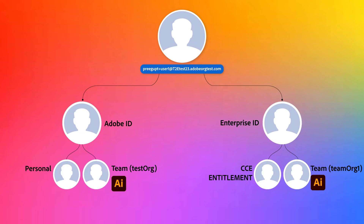This configuration frequently prompts the question: how is it possible for a team to have both an Enterprise and Federated user in it? The answer is simple — it doesn't. It has an entitlement profile, and that is linked to the Enterprise or Federated user. We'll illustrate what this configuration and login experience looks like in the following slides.